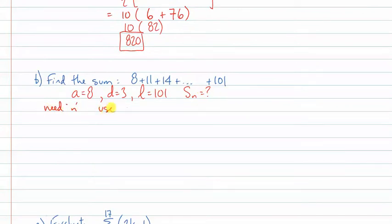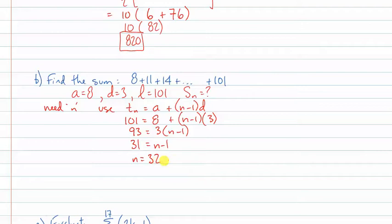So I'm going to use the formula from the previous lesson. T sub n is a plus n minus 1 d, which relates any term or general term to the first term, and n minus 1 common differences. So 101 equals 8 plus n minus 1 times common difference 3. Let's subtract 8 from both sides, 93, and let's divide by 3. That's going to be 31. So this tells me that n equals 32.